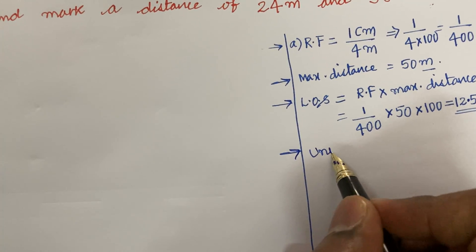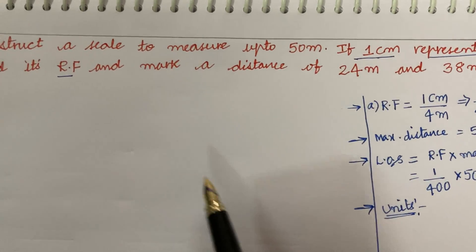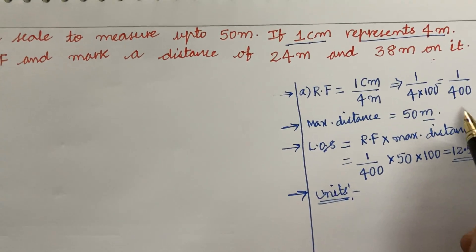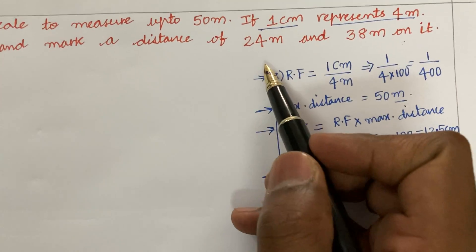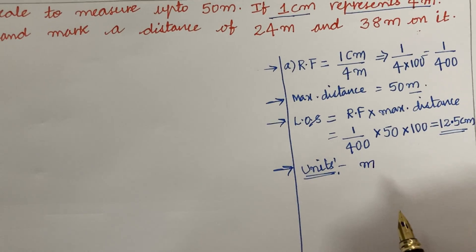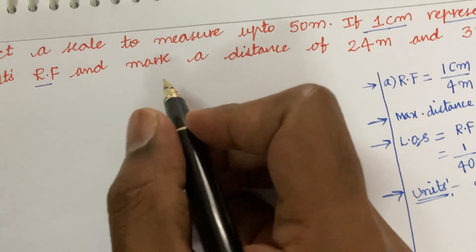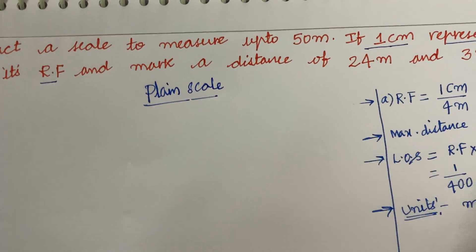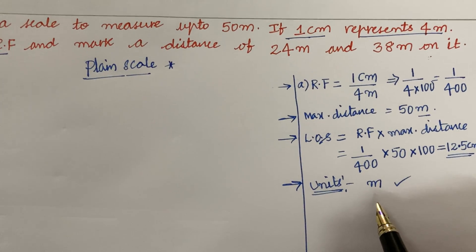Next, look at the units. From the units we can determine whether this belongs to a plane scale or a diagonal scale. The question asks to measure up to 50 meters and mark distances of 24 meters and 38 meters. By looking at those marking distances, you can see there is only one unit — meters — in the drawing. Since there is only one unit, this is a plane scale.